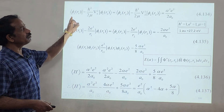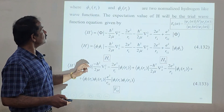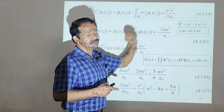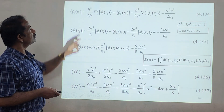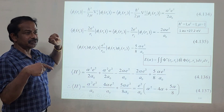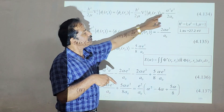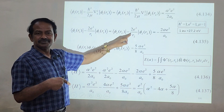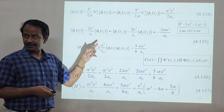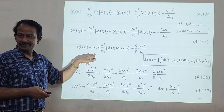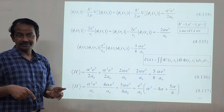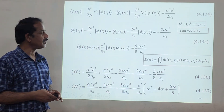Solving separately: the kinetic energy for the first electron gives alpha² e² / 2a0, and similarly for the second electron. The potential energy for each hydrogen atom gives −2 alpha e² / a0. The interaction energy integral over six coordinates is very tedious, and the result is (5 pi / 8) alpha e² / a0.